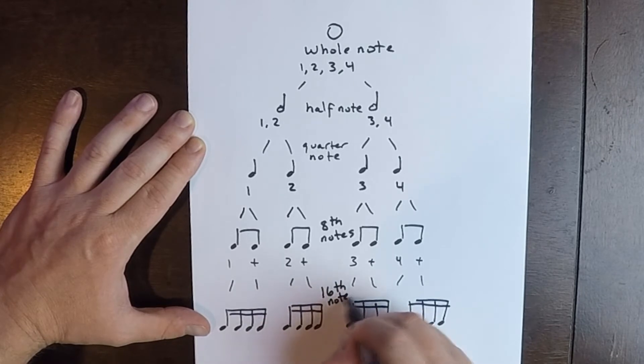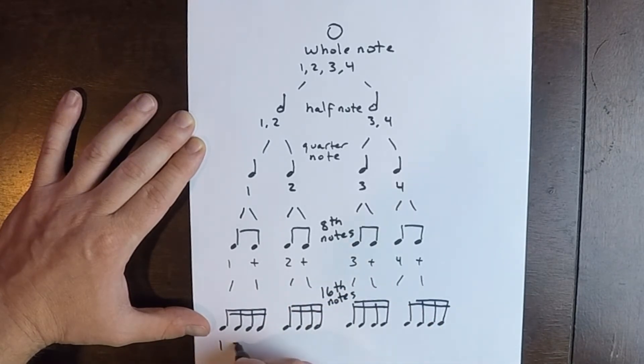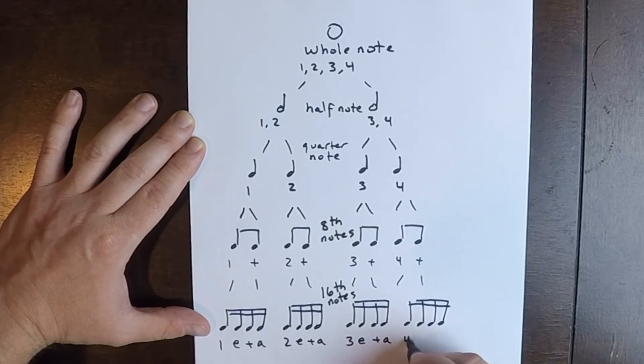Those get counted one e and a, two e and a, three e and a, four e and a. So just a quick recap: